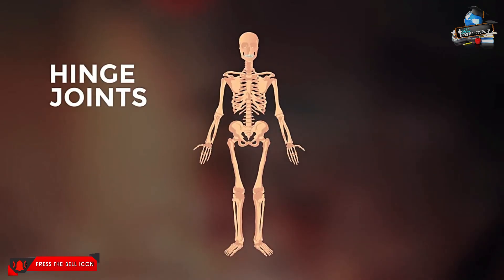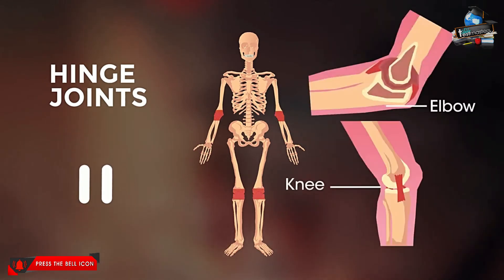So now hinge joints. Where do you think we have these? Pause the video and have a think. Of course, our elbows and knees.